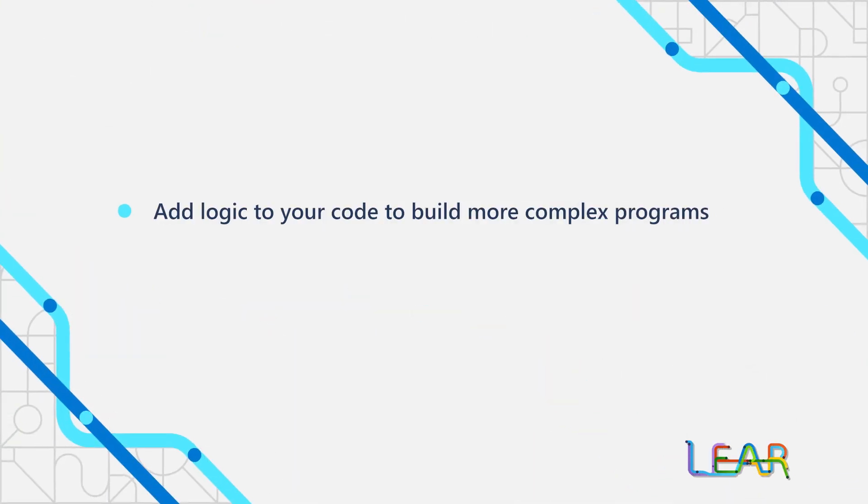In this second learning path for C-sharp, we dive deeper into writing logic to solve real-world challenges. In these modules, we expand on what you already learned when you took your first steps with C-sharp. We'll build more complex Boolean expressions to give us a broader vocabulary for our conditional statements.